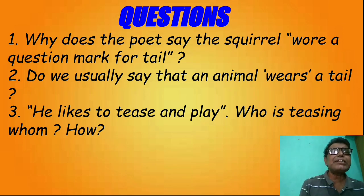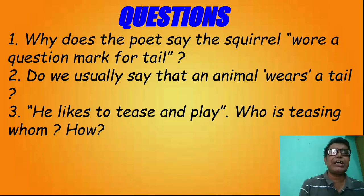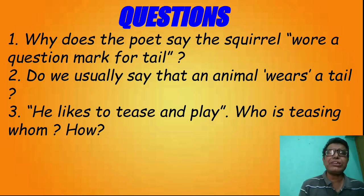Now I will address questions from the poem. First: why does the poet say the squirrel wore a question mark for tail? As already mentioned in the analysis, the squirrel does not actually wear a question mark. The tail is its distinctive feature. The way the squirrel stands or sits, its erect tail resembles a question mark — an interrogative mark.